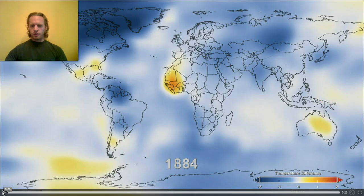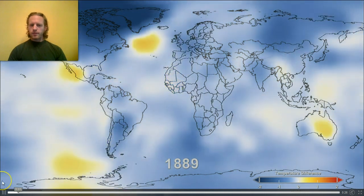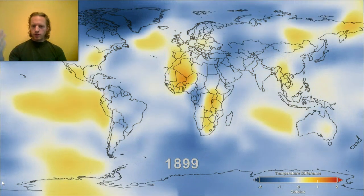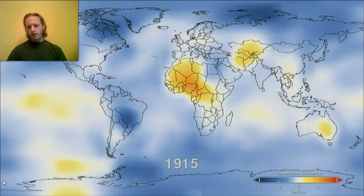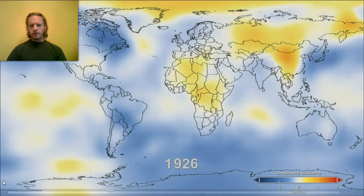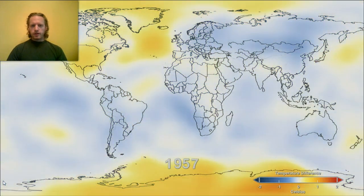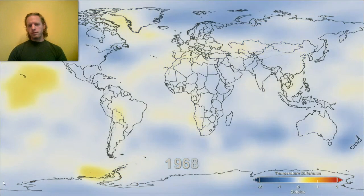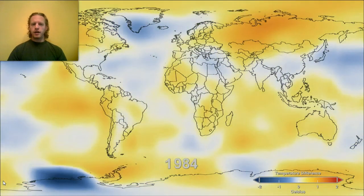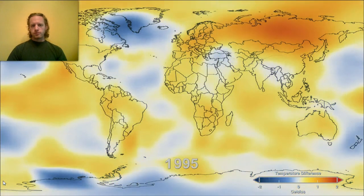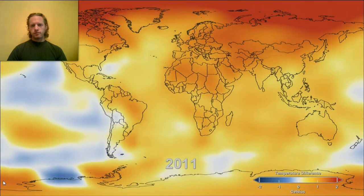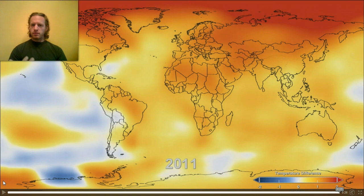The blue indicates colder temperatures, the red indicates warmer. And this is a time lapse from the year 1884 until present. We're seeing some ebb and flow, some rise and fall, getting about to the 1920s and 1930s. Now we're going to start seeing some minor changes — look at the Arctic shelf. Once we get to the 80s, start to see what happens here. It stops at 2011, but we see no reason that this trend is going to stop now.